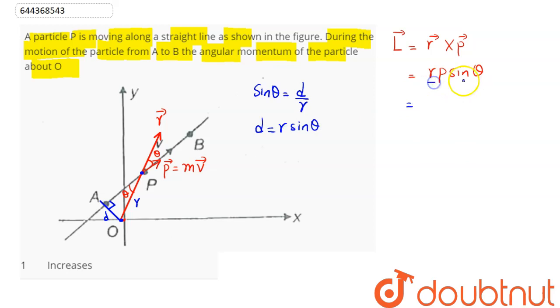So R sine theta is D, which means this comes to D into P.